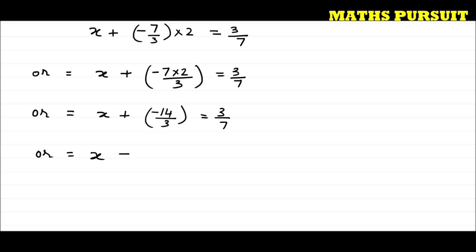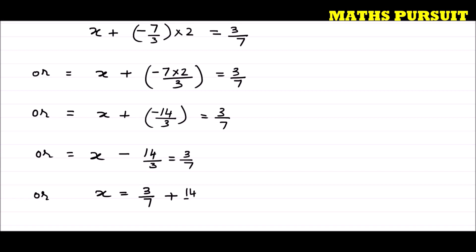So x plus minus 14 upon 3 is equal to 3 upon 7. I can write x is equal to 3 upon 7 plus 14 upon 3. How 14 upon 3? I am just moving this minus 14 upon 3 to the right hand side of this equation.